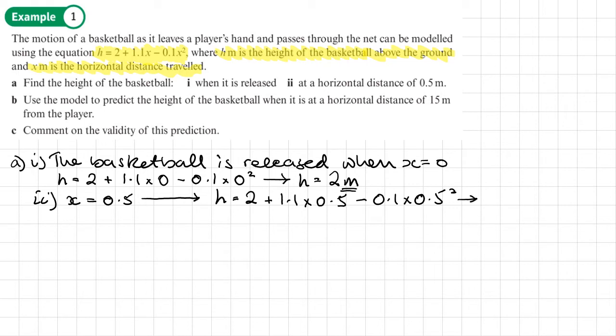That value of H gives us 2.525 meters. Now we could round this to three significant figures as 2.53, but since it's only three decimal places, we can leave the answer exact like that.